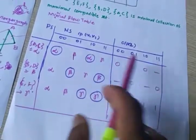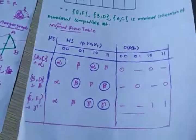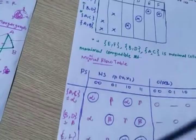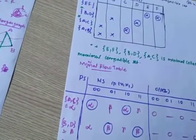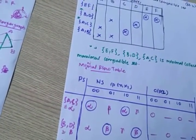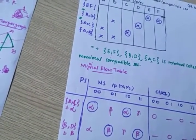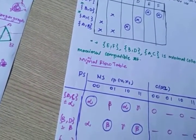This is the minimum flow table. The remaining topics will be discussed in the next class.